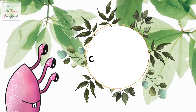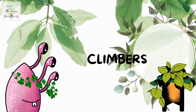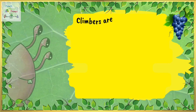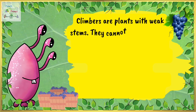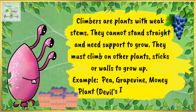Moving on to climbers. Climbers are plants with weak stems. They cannot stand straight and need support to grow. They must climb on other plants, sticks, or walls to grow up. For example, pea, grapevine, money plant (which is also known as the devil's ivy), bean, etc.